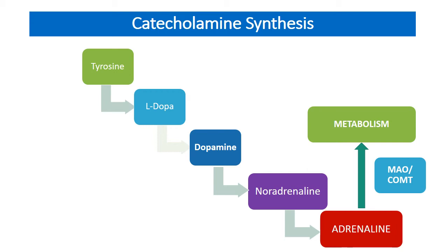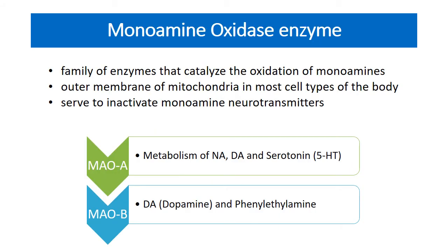Adrenaline acts on its postsynaptic receptor and gets metabolized — that is, inactivated — by the monoamine oxidase enzyme and the second enzyme catechol-O-methyltransferase (COMT). These two enzymes cause the metabolism of adrenaline and it gets inactivated. Now let us discuss about the monoamine oxidase enzyme. It belongs to a family of enzymes that catalyse the oxidation of monoamines. It is situated in the outer membrane of the mitochondria in most body cells, and it serves to inactivate — that is, metabolize — monoamine neurotransmitters like serotonin, dopamine, and norepinephrine.